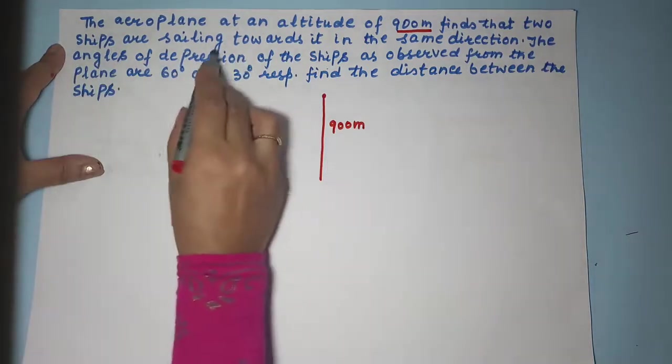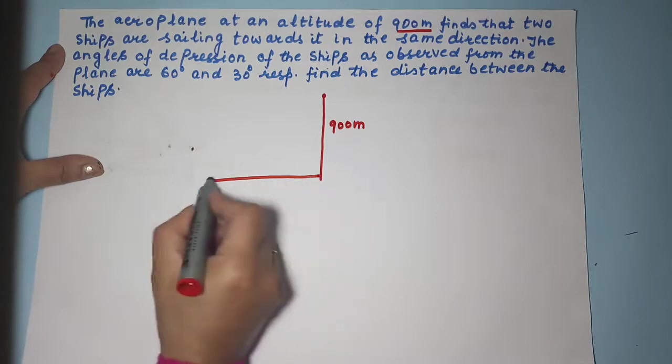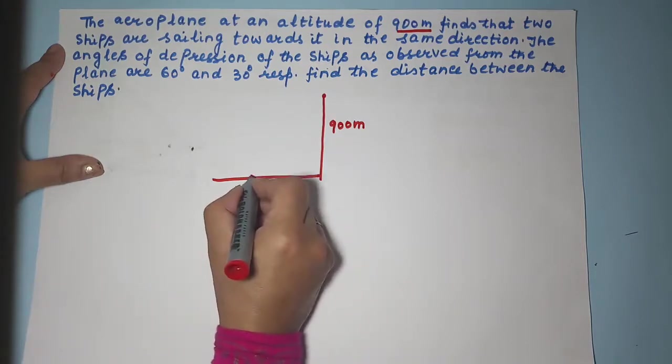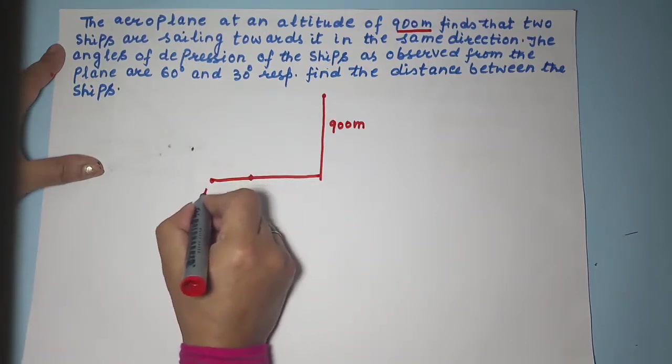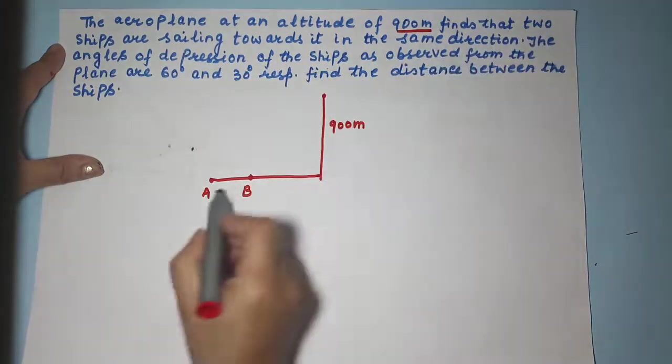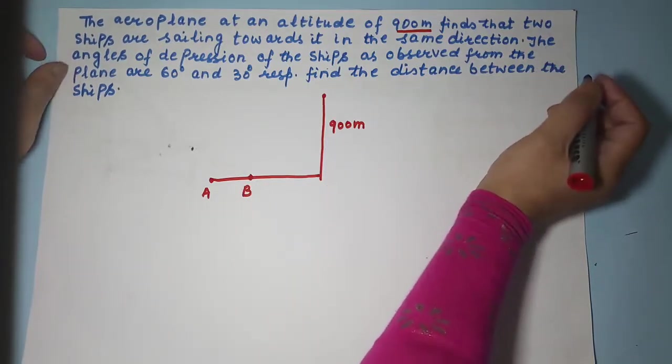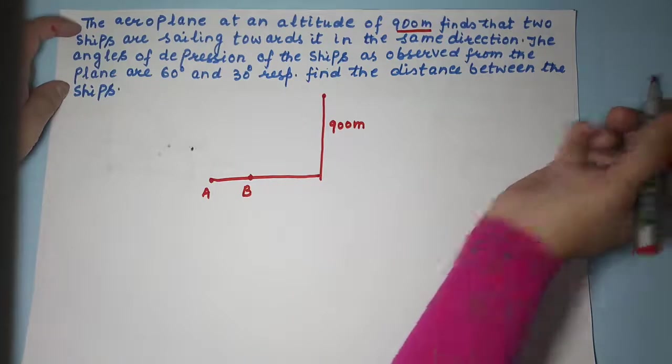It finds that two ships are sailing towards it. So there are two ships which are sailing towards it, coming towards it. Let these two ships be ship A and ship B in the same direction.